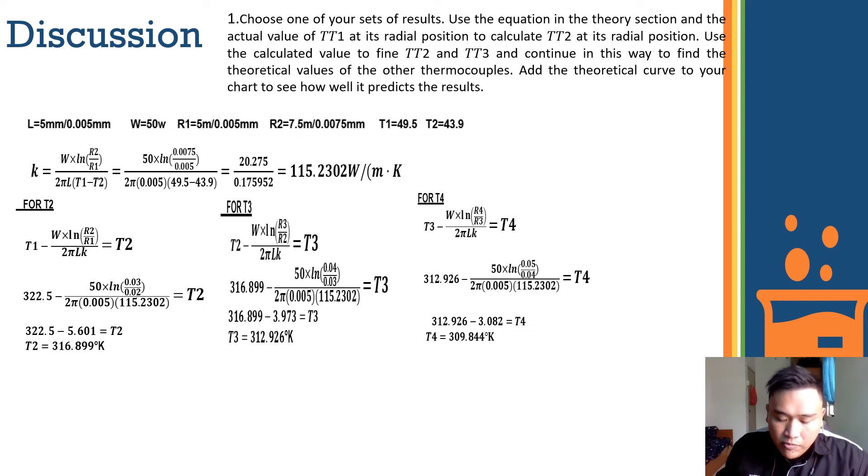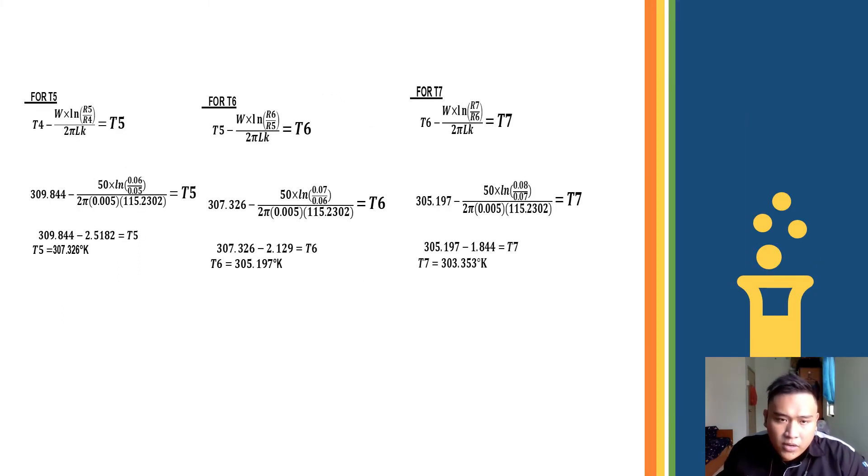And then we use the second equation for the next calculation to find T3, T4, T5, T6, and T7. And after we finish the calculation for the theory data, from T1 to T7 theory, when we compare the difference between the theory and the experiment data, we see the difference based on the graph in the data analysis. Okay, that's all for me. Thank you.